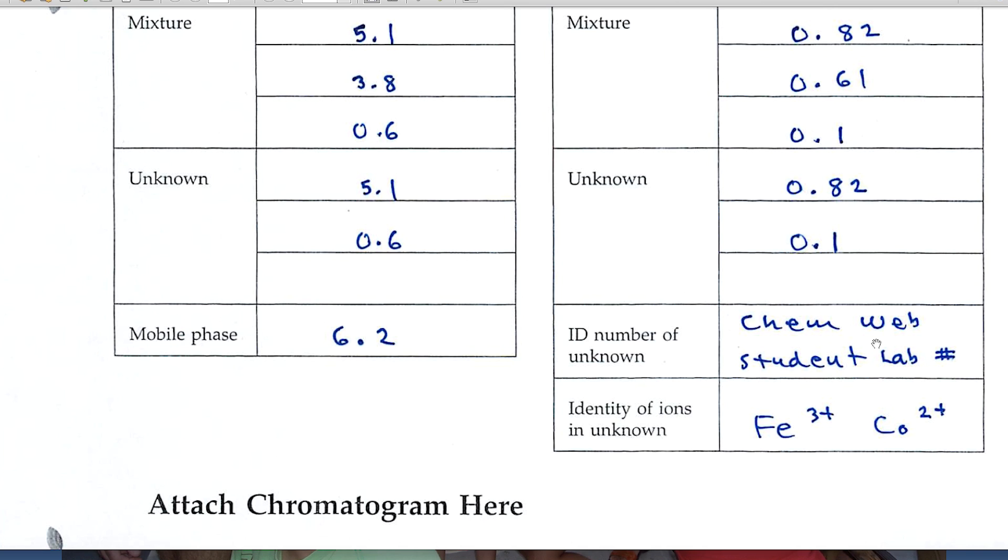And going down the table just a little bit further, it asks for the ID number of the unknown. Remember that there are different versions of the labs, and so it's okay to work together with a friend, but you always want to use your own data when you get ready to submit your reports, because data will vary and you wouldn't want to get penalized by using someone else's data. Your ID number is the ChemWeb number. When you log into ChemWeb, it says your student lab number is such-and-such and gives you a four-digit number. That's what you'd put right there.